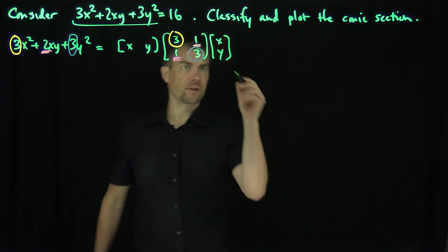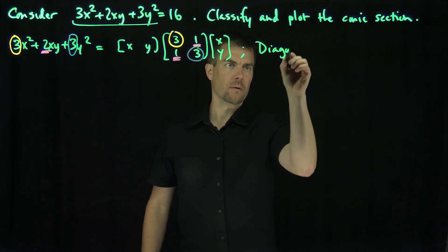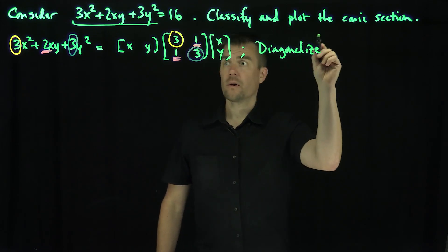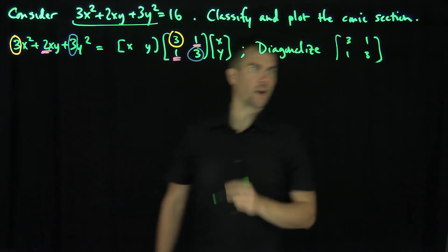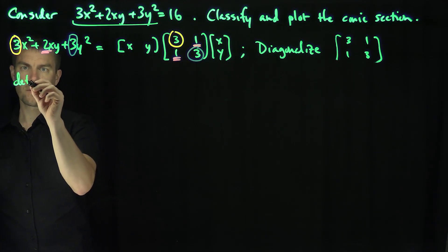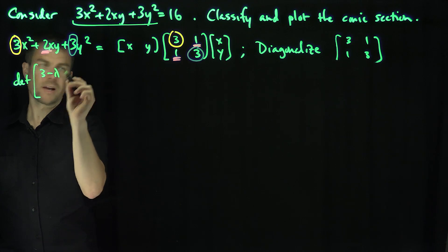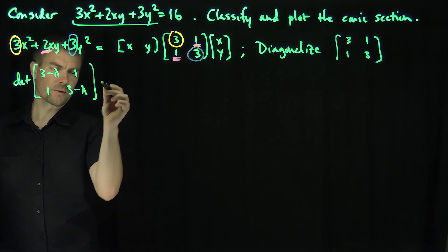Now the idea is to diagonalize this inner matrix. So the inner matrix is symmetric, so we're going to diagonalize the matrix [3, 1; 1, 3]. For the eigenvalues we're going to set the determinant of [3-λ, 1; 1, 3-λ] equal to 0.